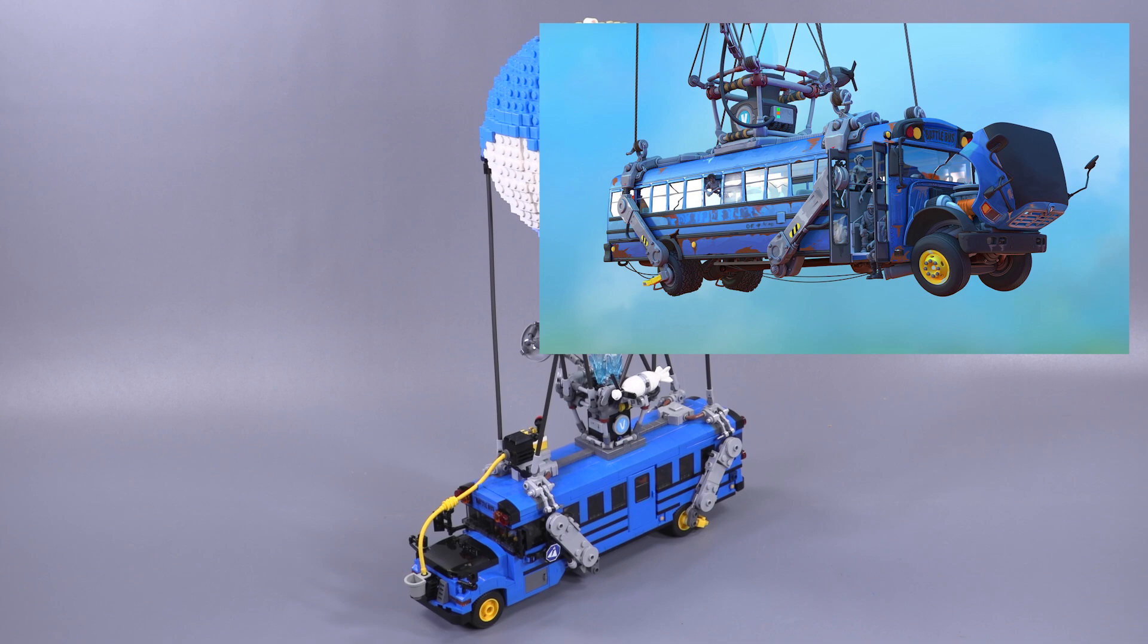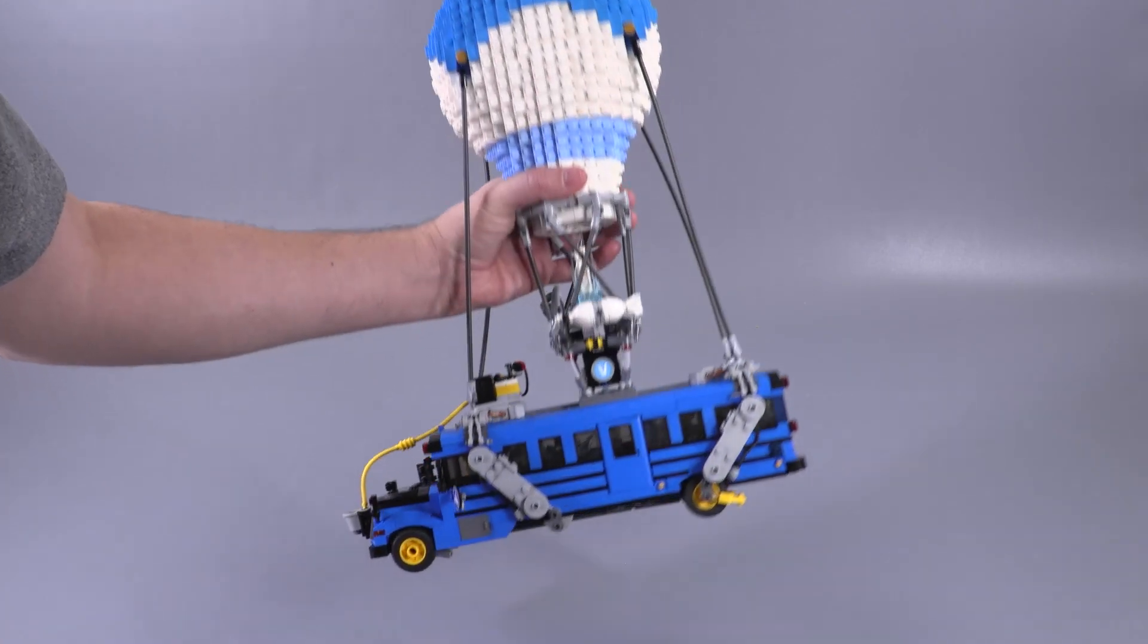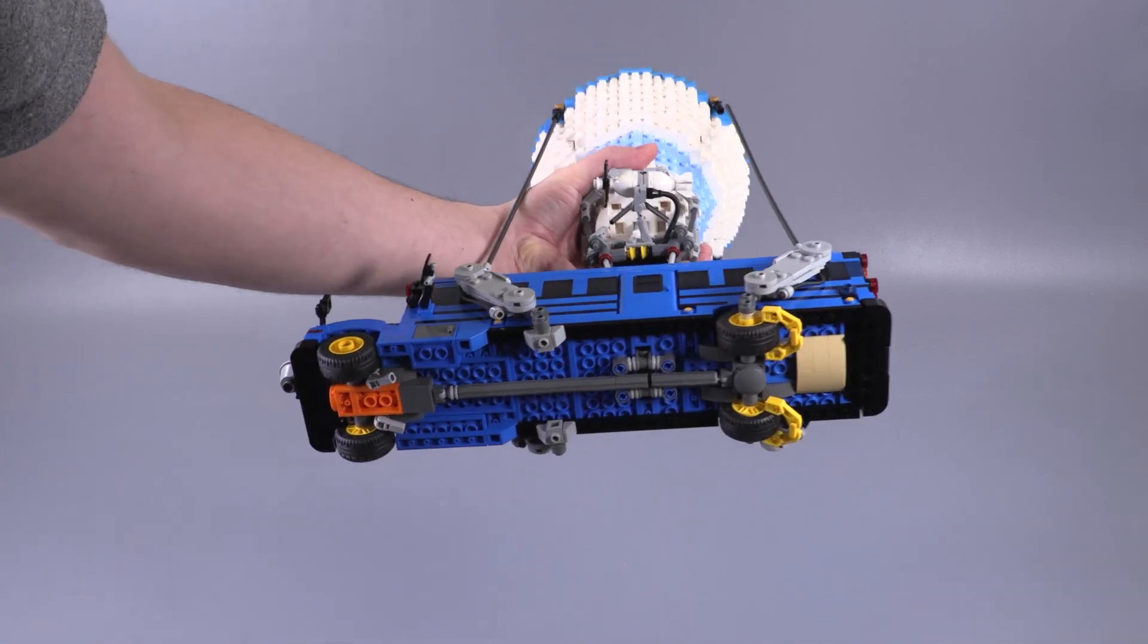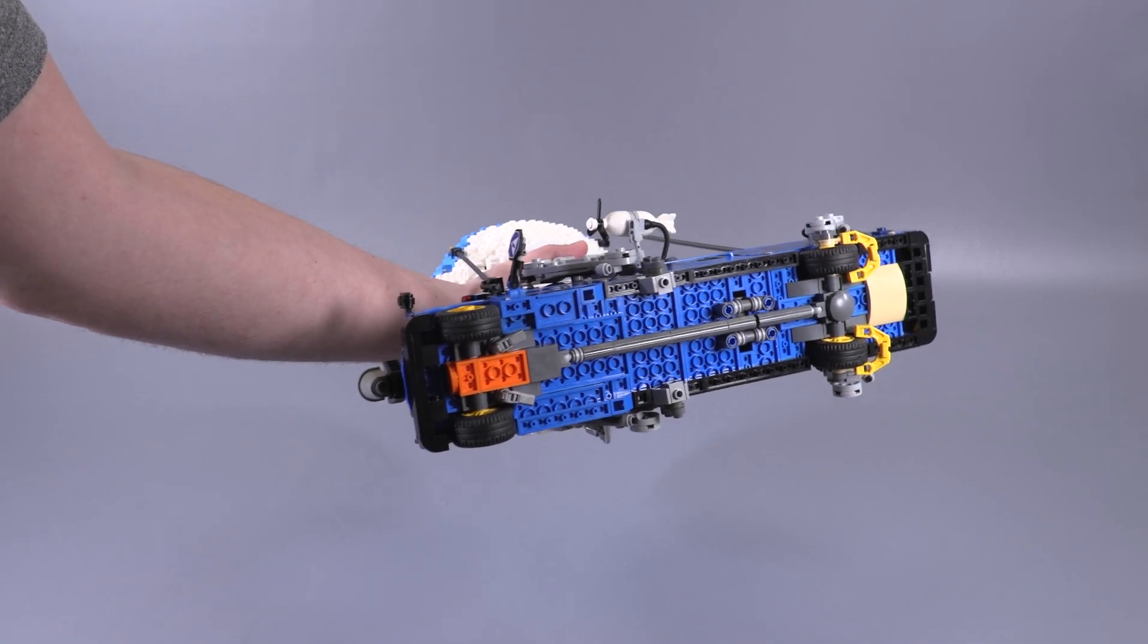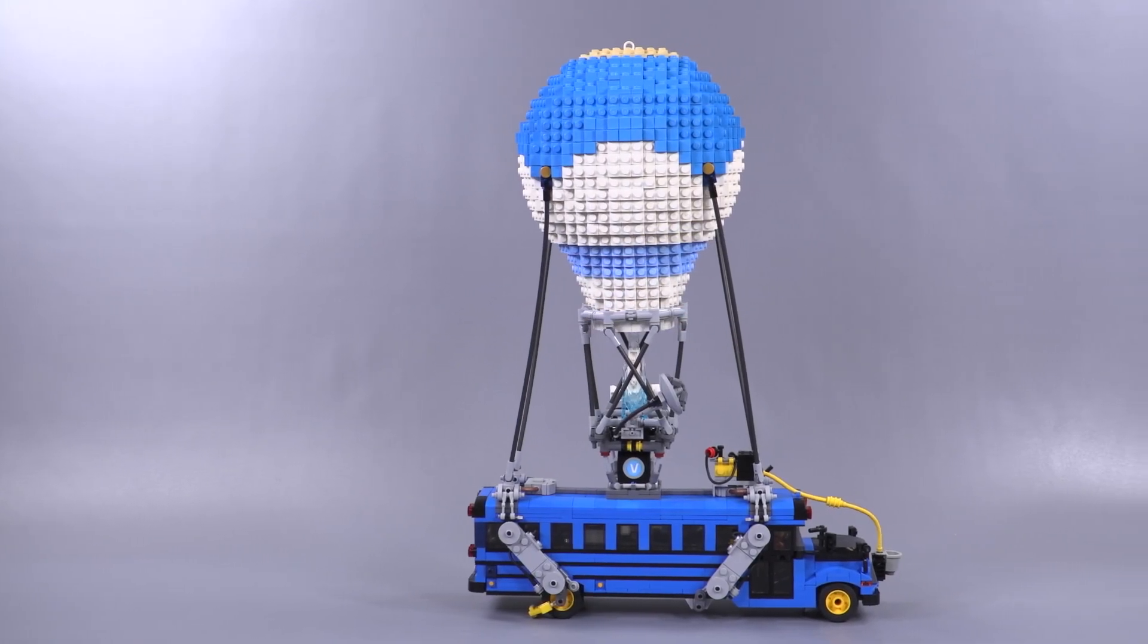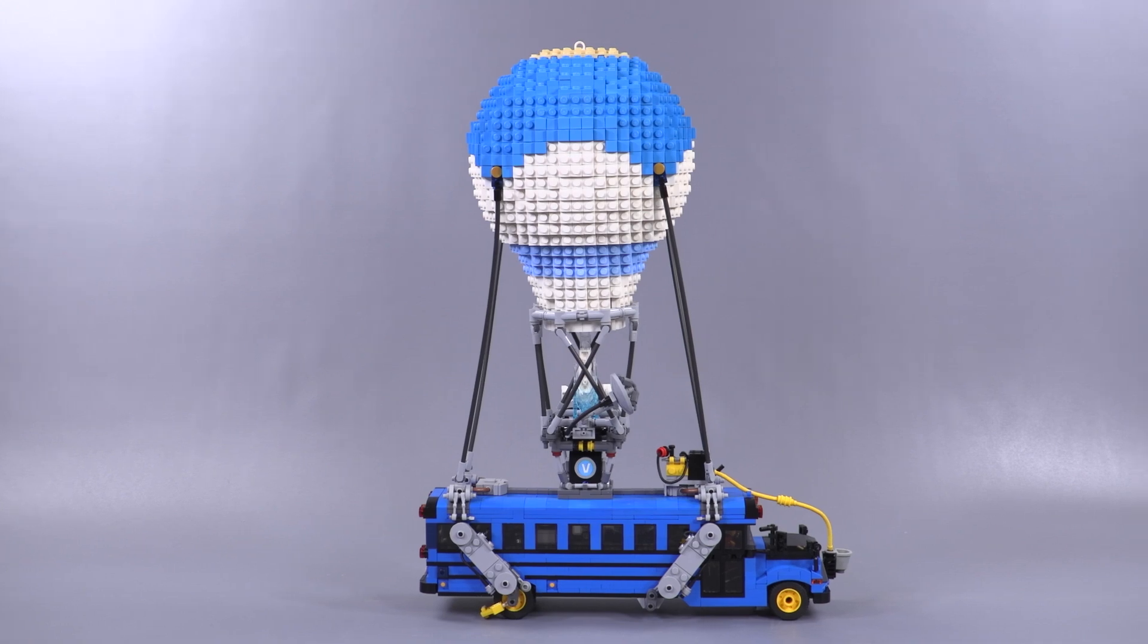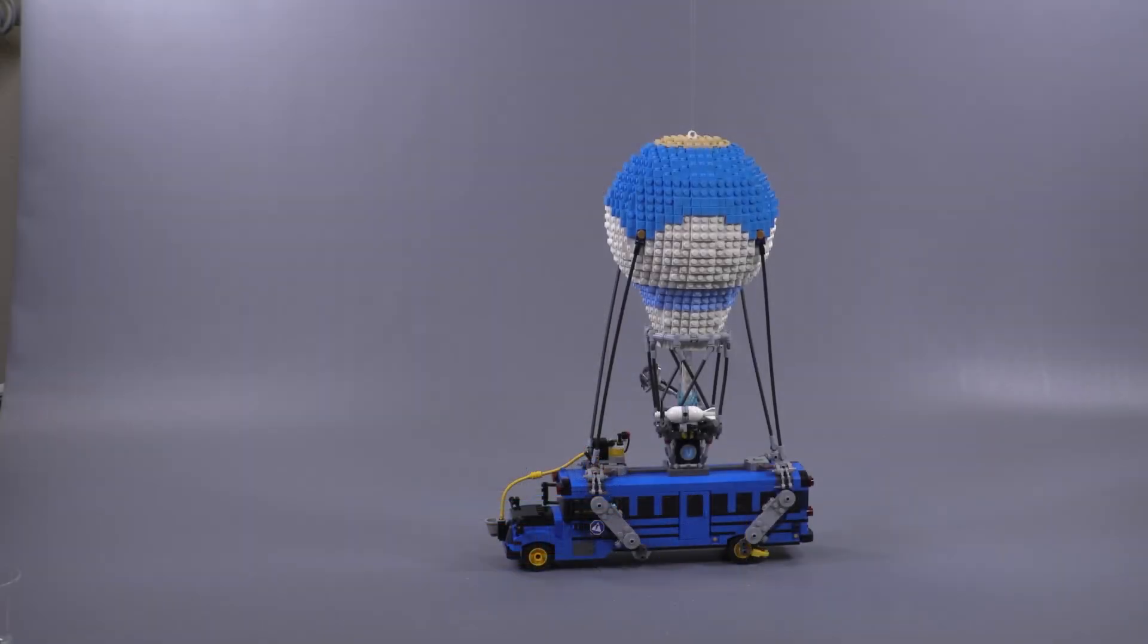Let me tell you how big this thing is. At minifigure scale, it is 32 centimeters long or 12.5 inches, 17 centimeters wide or 6.5 inches, and 42 centimeters high—16.5 inches. Normally I like to talk about details first, but let's get straight into the functions.